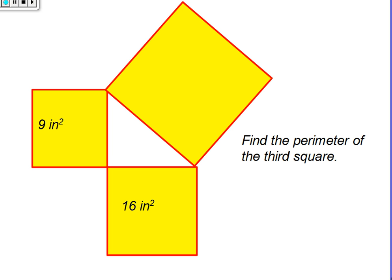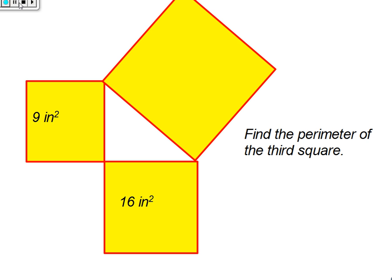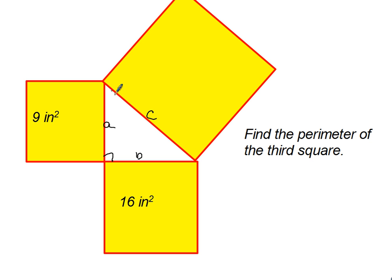For this question we are asked to find the perimeter of the third square. This is a Pythagorean Theorem model. What we have are two legs, A and B, which form a right angle and the hypotenuse which is formed by the square C.